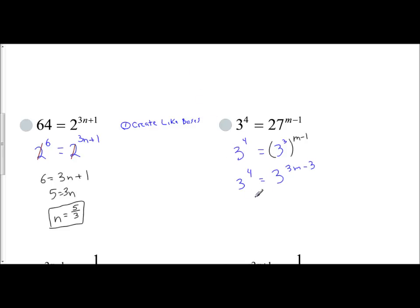Now that you have the same base, 3 and 3, you can cross them out and just deal with the exponents. 4 = 3m - 3. You would add three and get 7 = 3m. You would divide by three and get m = 7/3. So when you create like bases, once you do that, make sure the properties of exponents apply. Then set the exponents equal and ignore the basis.